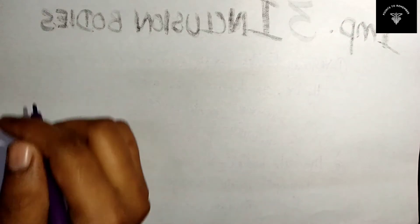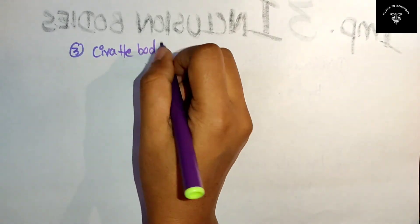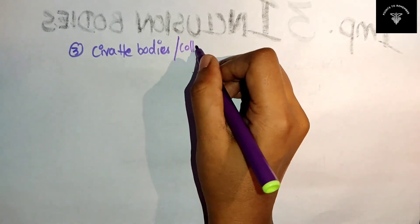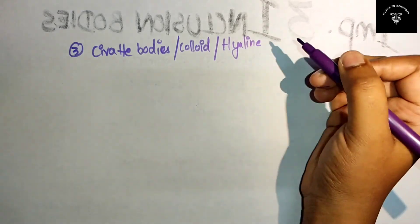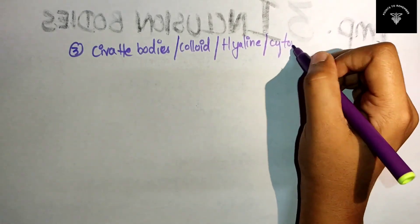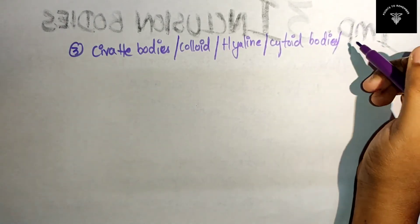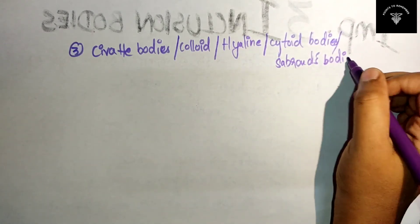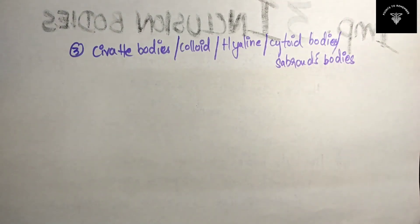The third most important inclusion body is your Civatte bodies. These are also called colloid bodies, hyaline bodies, cytoid bodies, or Sabroe's bodies. You should remember all these different names for this inclusion body.